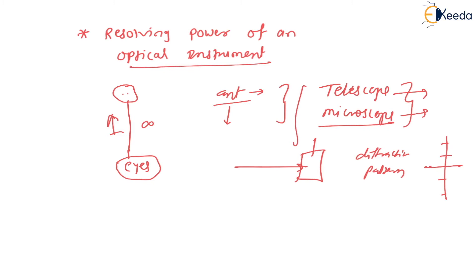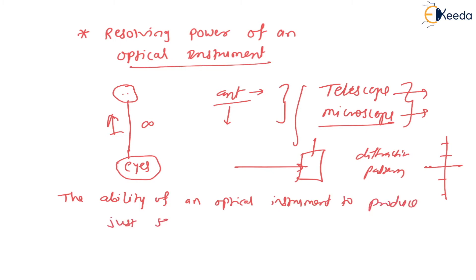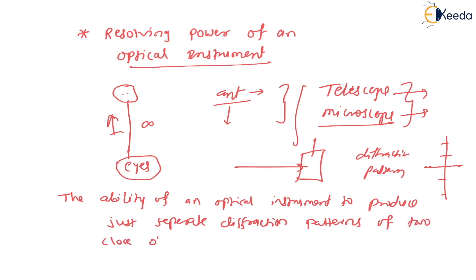So this ability of optical instruments is useful — they use this particular phenomenon. The definition is: the ability of an optical instrument to produce just separate diffraction patterns of two close objects. Both objects will have different diffraction patterns, and the instrument has the ability to split those diffraction patterns. This ability is called the resolving power, or RP, of an optical instrument.